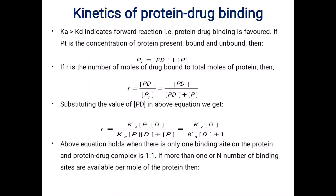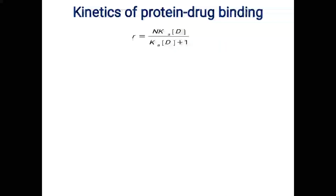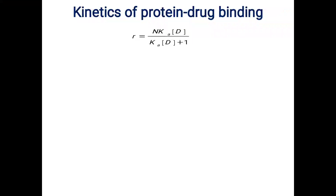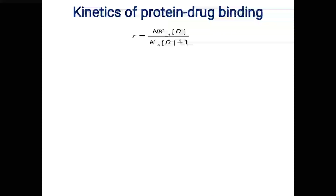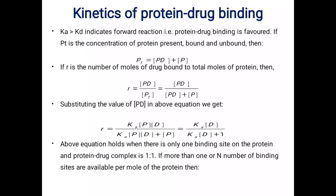We know albumin has multiple binding sites. For such proteins, if more than one or n number of binding sites are available per mole of protein, then the equation can be converted to: r equals n·Ka·D divided by (Ka·D plus 1). We simply put n into the equation to get this final form.